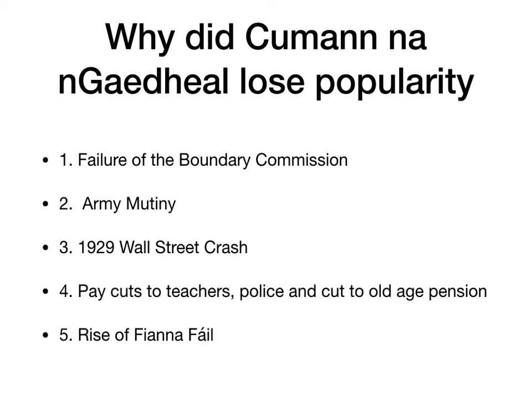We looked at why Cumann na nGaedheal lost their popularity: there was a failure with the Boundary Commission, there was the army mutiny, there was the 1929 Wall Street crash which really affected the economy and led to pay cuts to teachers, police, and a cut to the old age pension, and also there was that rise of Fianna Fáil as this new party.